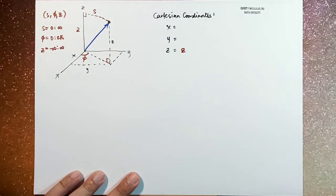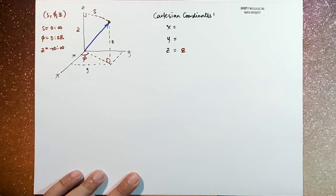and then z can be from negative infinity to infinity. So these are the possible values of s component, phi component, and the z component.